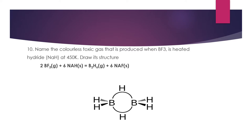Question 10: Name the colorless toxic gas produced when BF3 is heated with sodium hydride. When BF3 reacts with sodium hydride, the major product is diborane (B2H6). Diborane has a special structure with three-center two-electron bonds called banana bonds. Because of this structure it is highly unstable and easily catches fire.